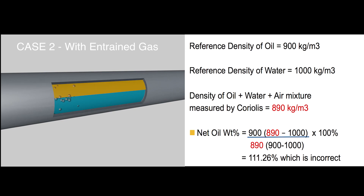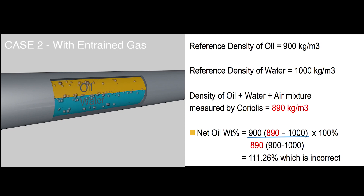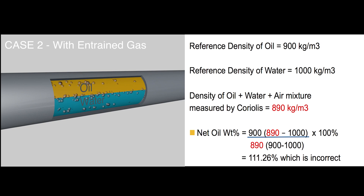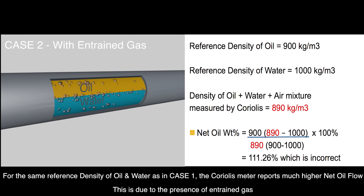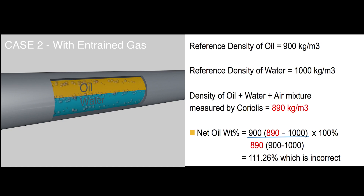Case 2: when entrained gas is present in the oil-water emulsion. The reference density of oil is 900 kg/m³ and the reference density of water is 1000 kg/m³. The density of the oil, water, and air mixture measured by the Coriolis flow meter is 890 kg/m³, because the presence of air causes a density measurement drop. According to the equation, the net oil weight percentage is calculated as 111.26%, which is incorrect.